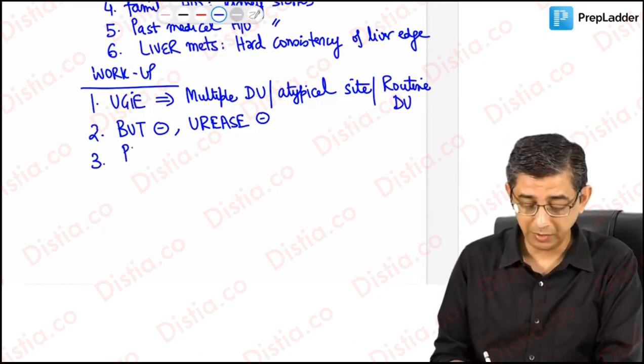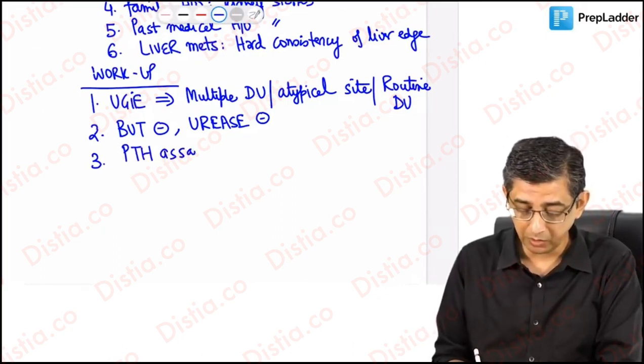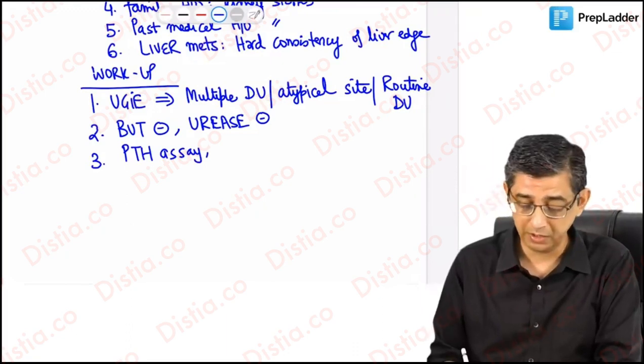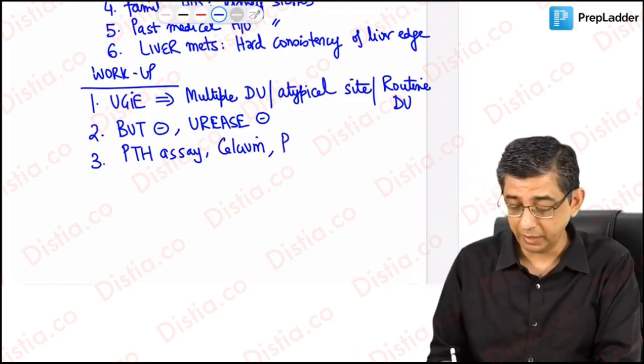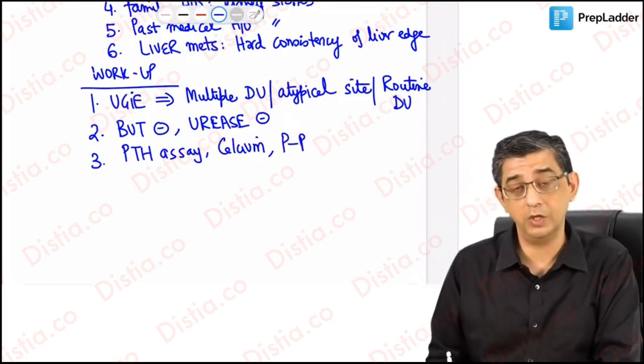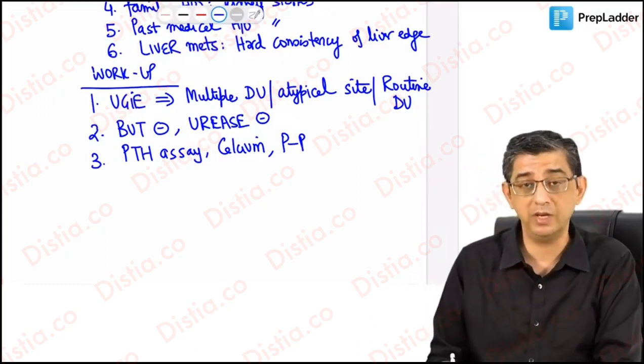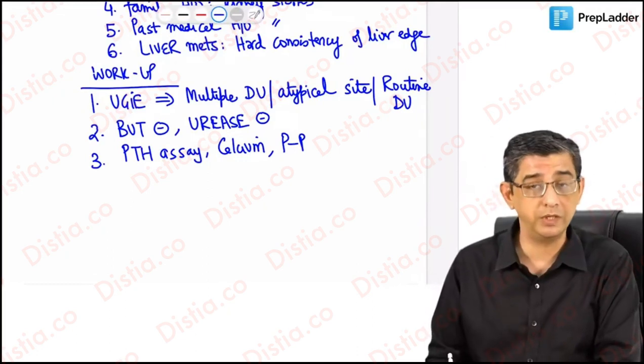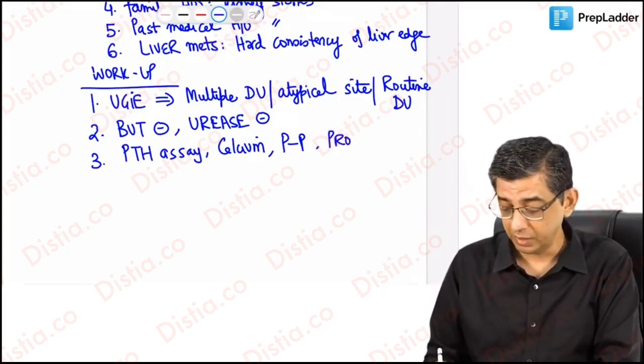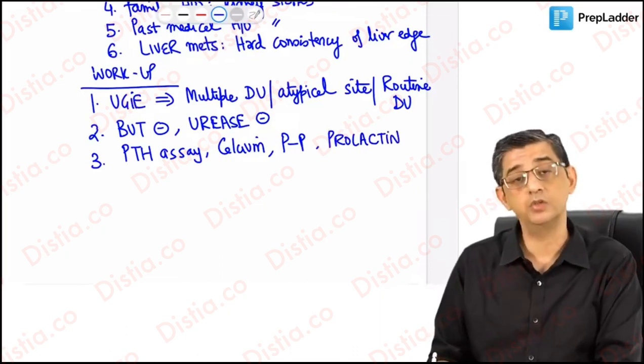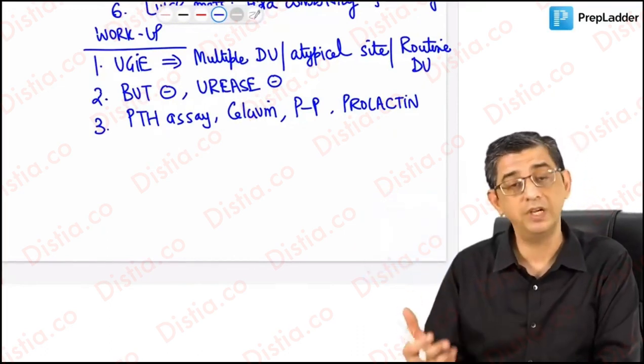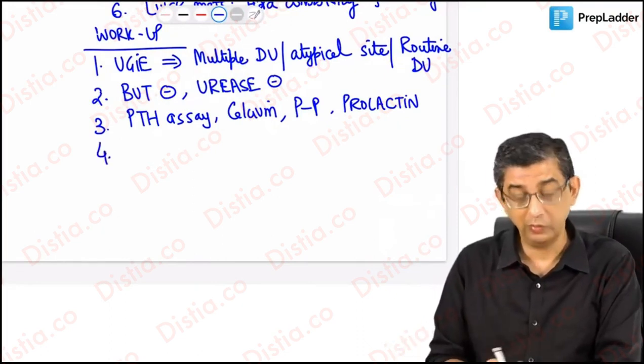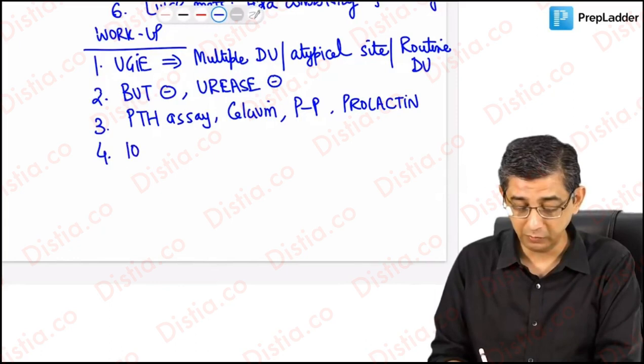The next investigation would be PTH assay because they could be a concomitant parathyroid adenoma causing excess of PTH. Serum calcium will also aid you in the diagnosis. You can also check for the values of pancreatic polypeptide. Prolactin levels will also be helpful because it can pick up a prolactinoma which is associated with MEN1. In point number three of investigations, I am trying to check for whether the person is having multiple endocrine neoplasia associated or not.